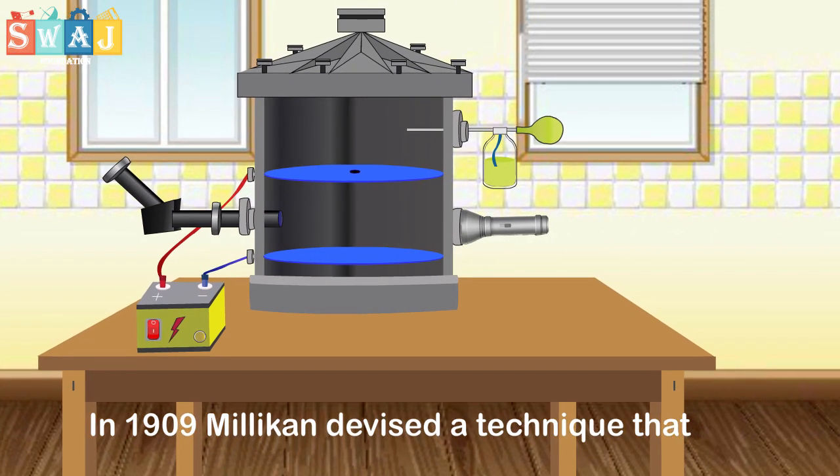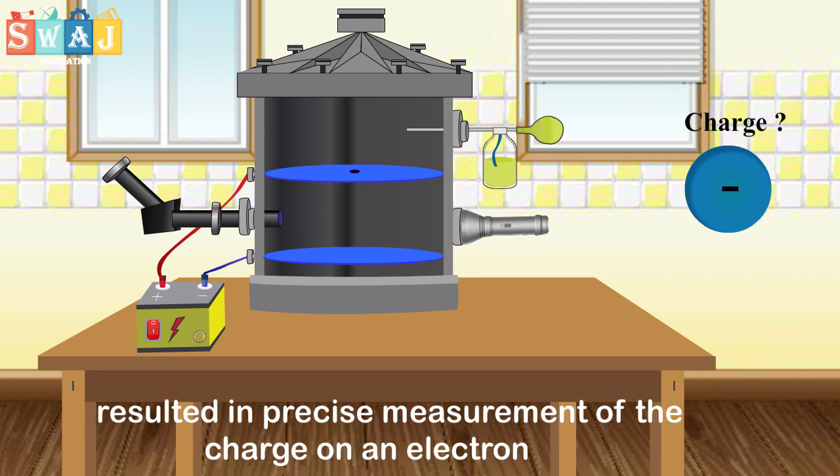In 1909, Millikan devised a technique that resulted in precise measurement of the charge on an electron.